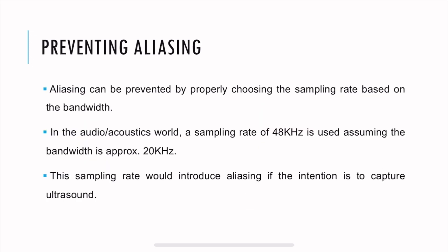Now, how to prevent aliasing? It can be prevented by properly choosing the sampling rate based on the bandwidth. As I mentioned earlier, in the audio acoustic world, we use a sampling rate of 48 kilohertz, assuming the bandwidth is approximately 20 kilohertz. But if you use the same sampling rate, if your intention is to capture ultrasound, which is way over 20 kilohertz, again, it's going to result in aliasing. So you need to keep that in mind. If you want to capture something in ultrasound like megahertz, then you need to use an appropriate sampling rate.